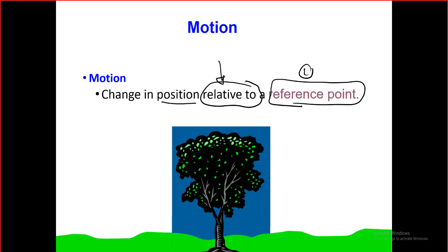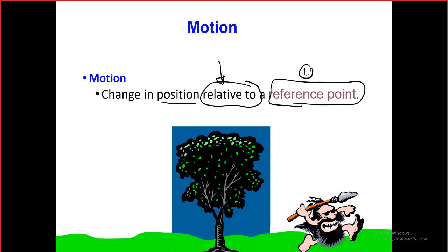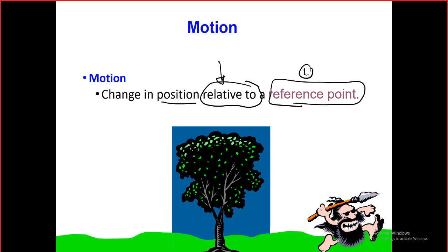For example, look at this. Is it moving right now? Yes, it is moving — I can see it moving. But it's moving relative to what? All of us will unconsciously choose the reference point to be the tree. Relative to the tree, it is changing its position, so it has motion.